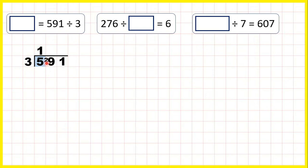Now we have 29 divided by 3. That's 9 remainder 2, because 9 times 3 takes us to 27, but then from 27 we need 2 more to get to 29.